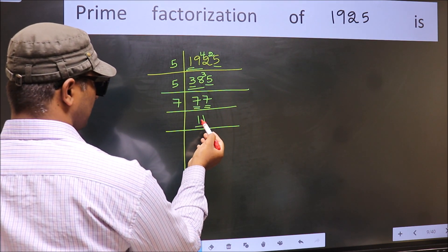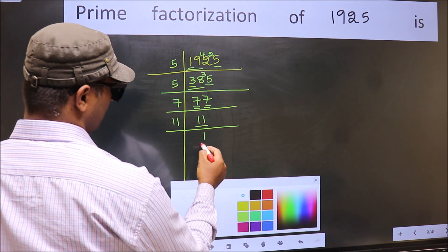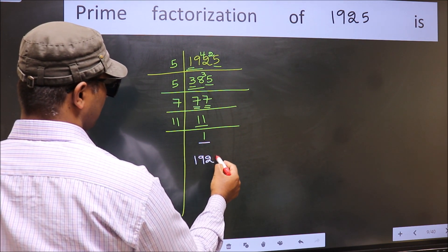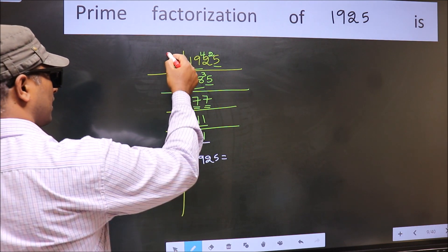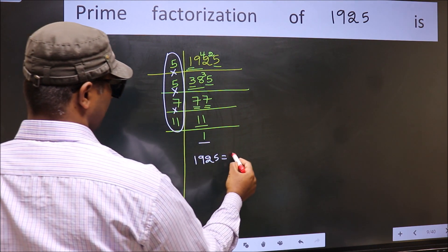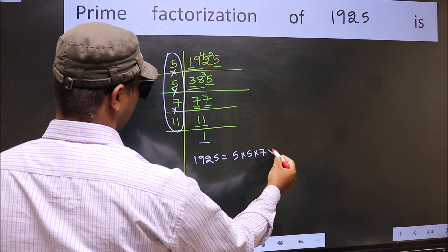Now here we have 11, 11 is a prime number, so 11, 1 is 11. So we got 1 here. So the prime factorization of 1925 is the product of these numbers. That is 5 into 5 into 5 into 7 into 11. This is the prime factorization of 1925.